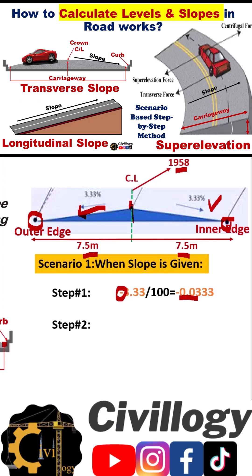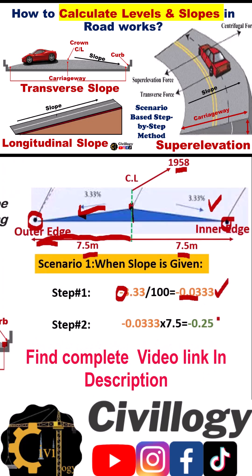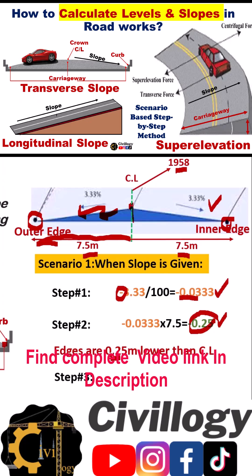Step number two: multiply the value obtained in step one by the mid-width of the road, which is 7.5 meters. You will get the value 0.25. The minus sign indicates that the slope is downward — this 0.25 with a minus sign means the edges are 0.25 meters lower than the centerline.